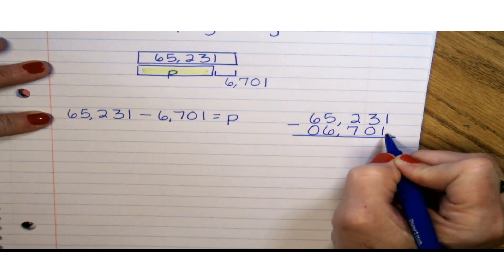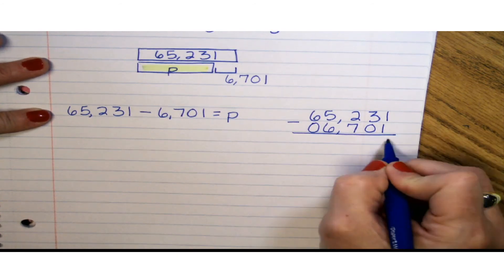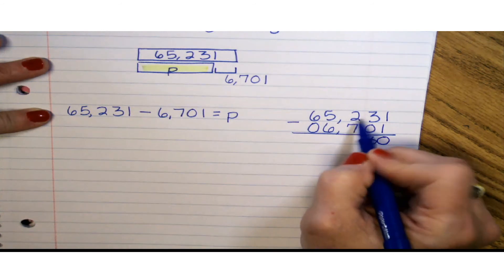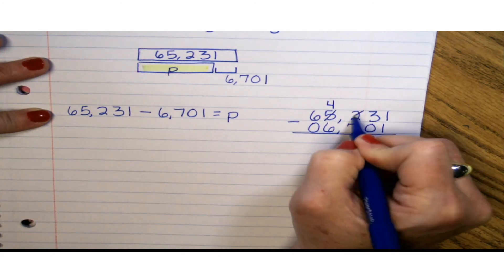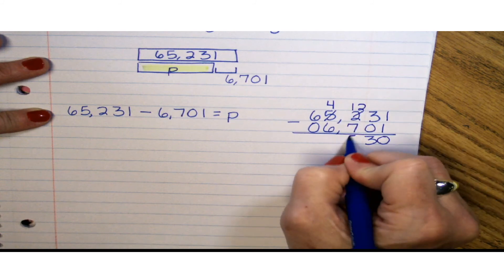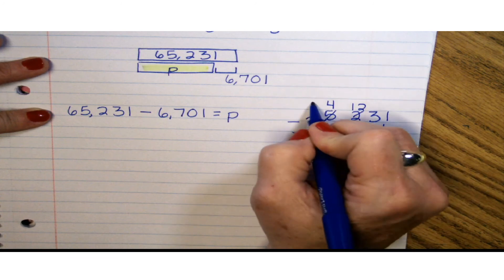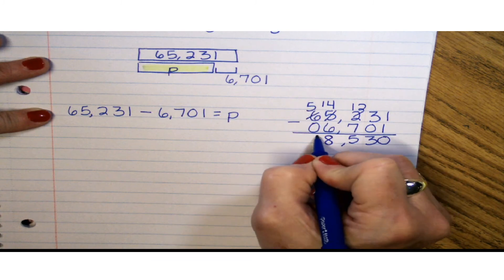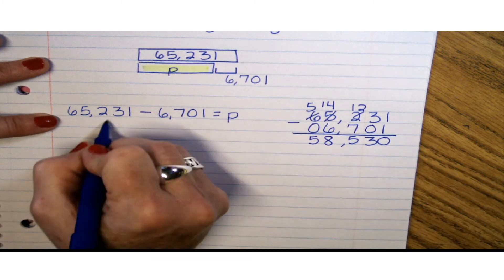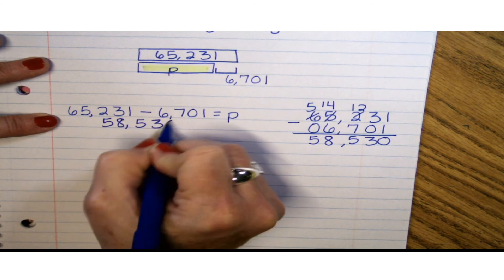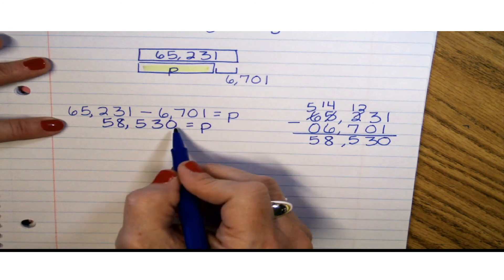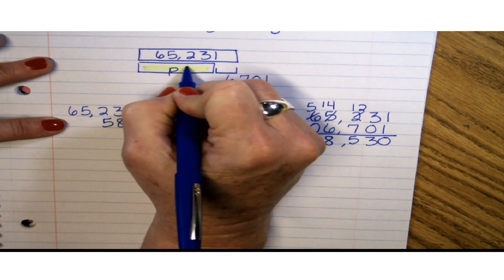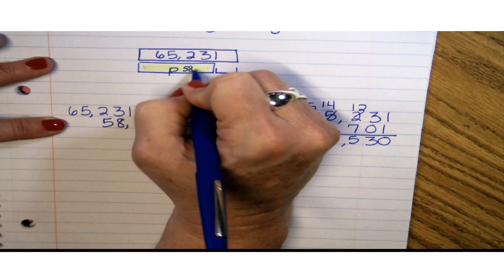We're going to come down to the ones place and start subtracting. 1 minus 1 is 0. 3 minus 0 is 3. We can't take 7 from 2, so we're going to do some regrouping: 12 minus 7 is 5. We can't take 6 from 4, so we regroup again: 14 minus 6 is 8. And 5 minus 0 is 5. So 58,530 is going to represent P, which is the number of people who watched the Astros play today, and that is where we would place our answer, right here in this box.